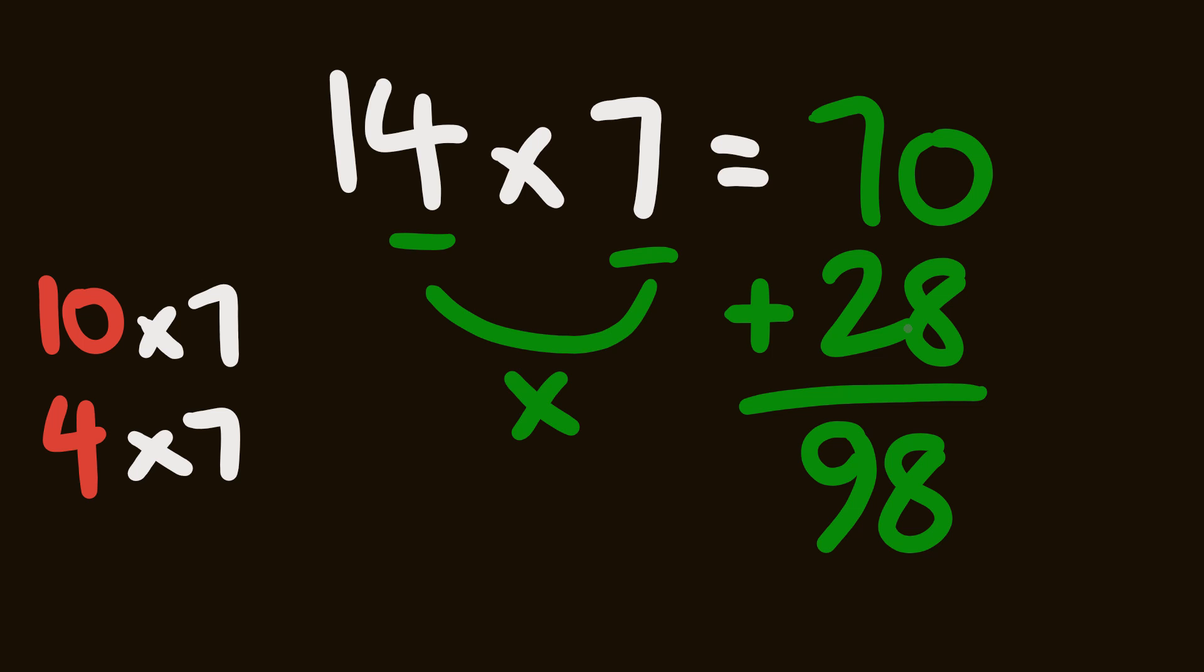4 times 7 is equal to 28. Add those together, you have your answer. As I said, nice and simple, and you may have been using this already. So there you go, two methods that you can use to multiply numbers all the way up to 20.